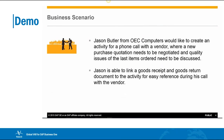A simple example is when Jason Butler from OEC Computers would like to create an activity for a phone call with a vendor where a new purchase quotation needs to be negotiated and quality issues of the last items ordered need to be discussed. Jason is able to link a goods receipt and a goods return document to the activity for easy reference during his call with the vendor.